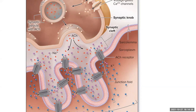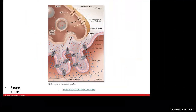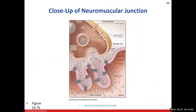Acetylcholine will bind onto these chemically-gated ion channels, triggering their opening and allowing sodium to flow into the cell and potassium to flow out. The area where our motor neuron hovers above the muscle fiber is called the motor end plate. It's not smooth or flat — it has folds. That's how you're able to discern it from other areas of our muscle cell.